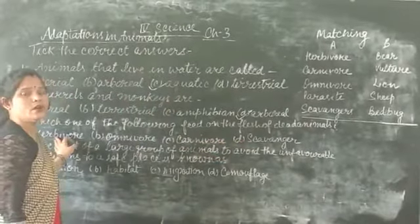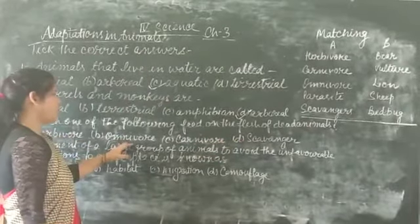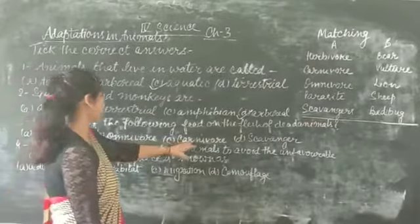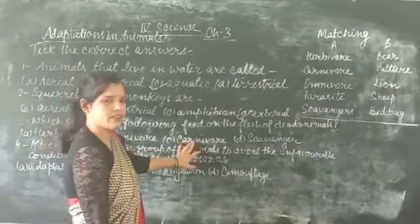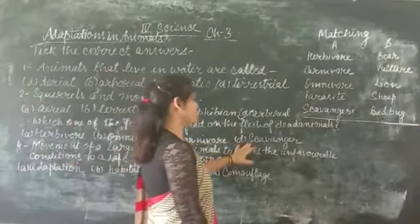So herbivore eats green plants, carnivore is flesh eating, omnivore eats both flesh and green plants, and scavengers feed on dead animals.